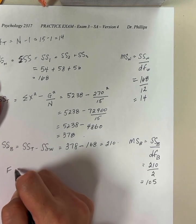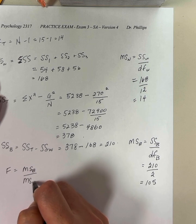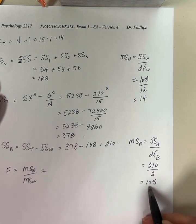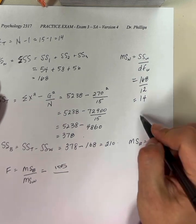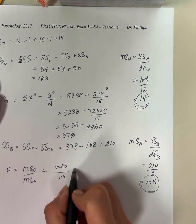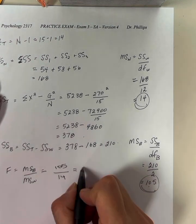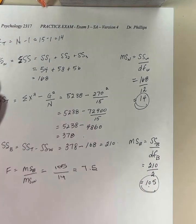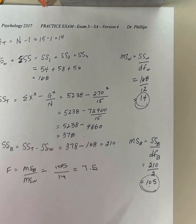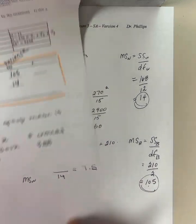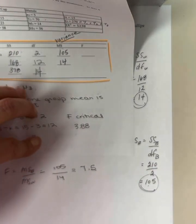Now I have my F statistic, which is mean square between divided by mean square within. Mean square between was 105, mean square within was 14. I get 7.5. Okay. So I compare 7.5 to my critical value. And for consistency, I'll do it in red. So step four.